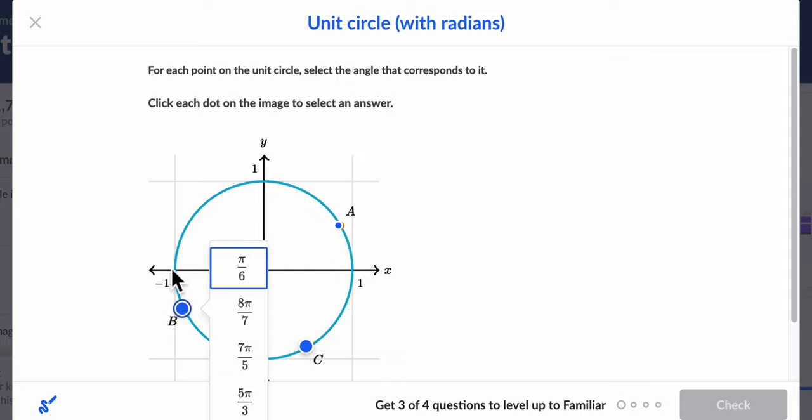Over here, b, looks like it's pi over 6 past pi, so it's 1 pi plus pi over 6. Now, 1 pi is like 6 sixth plus another sixth is 7 sixth pi.